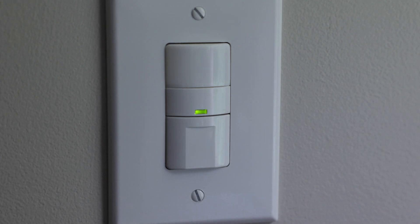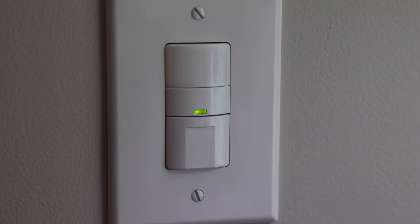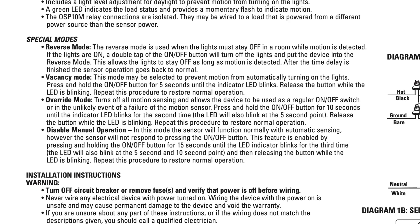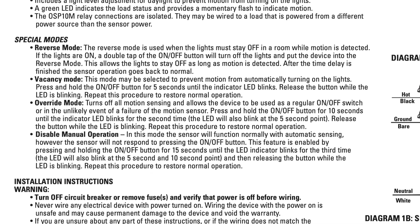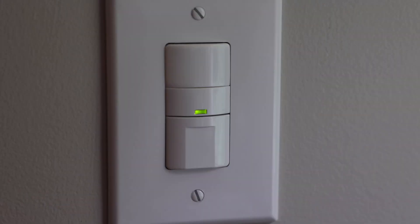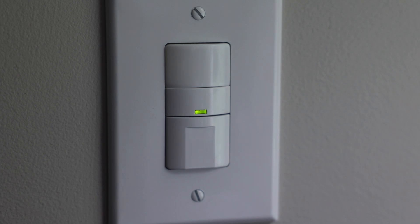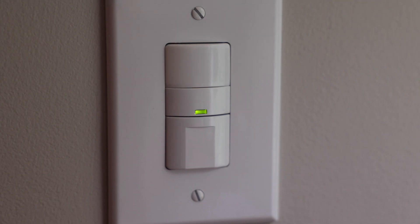There are a few other things you should know about this switch and the different modes you can set it up for. One of those is called reverse mode, where the lights stay off while motion is detected — the exact opposite of why most people use these switches. To set it, you just double-tap the button. Now as I move throughout the room, it's going to stay off. After the time delay is finished, sensor operation goes back to normal, so it won't stay in reverse mode permanently.